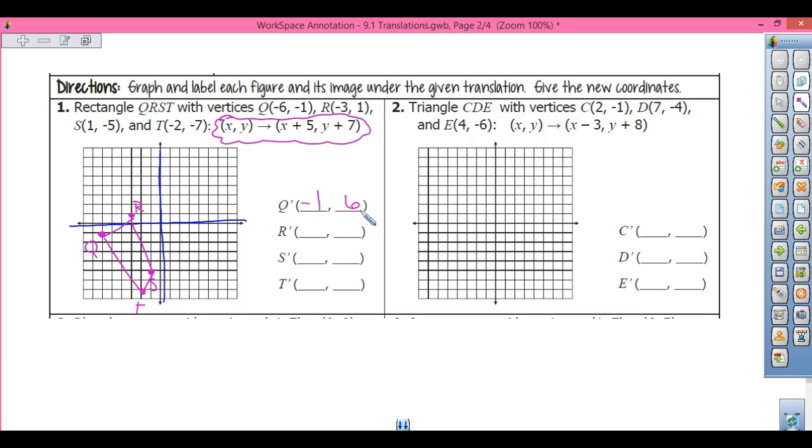My R is the same thing. So I take the x plus 5: -3+5 is 2, and the y plus 7: 1+7 is 8. I have my S at (1, -5), so 1+5 is 6, and -5+7 is 2. And my T is going to be -2+5 is 3, and -7+7 is 0.